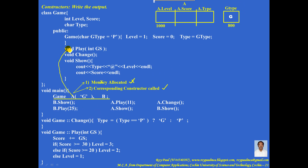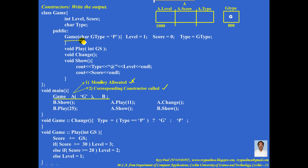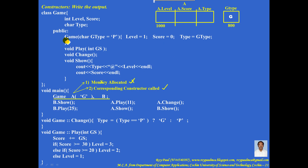Control goes inside the constructor. Level, score, and type are data members. Inside a constructor, the programmer writes only the name of the data member; the compiler automatically takes this as the name of the object for which the constructor was called, dot the data member. So here the constructor was called for object A: A.level = 1, A.score = 0, and A.type = gType. Since gType is 'g', A.type becomes 'g'.